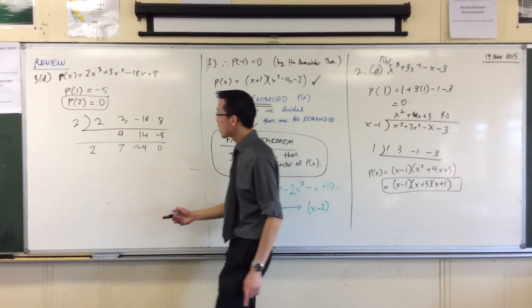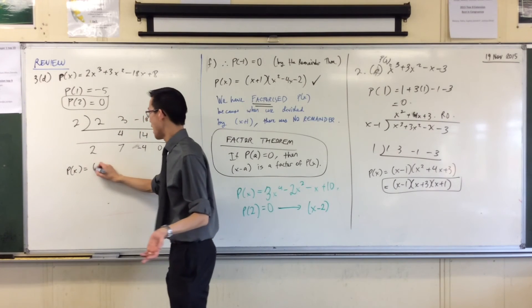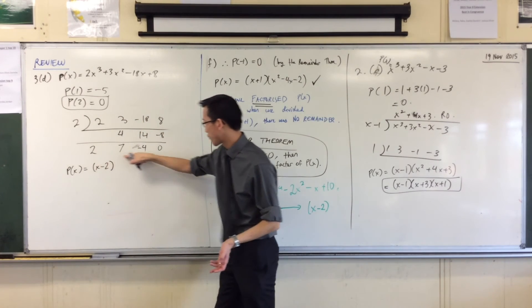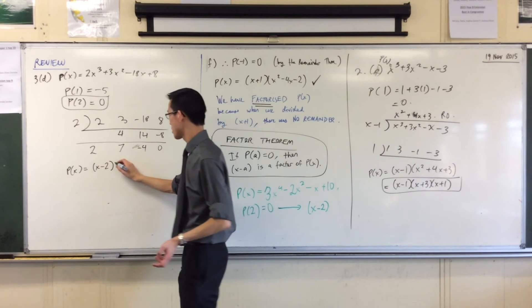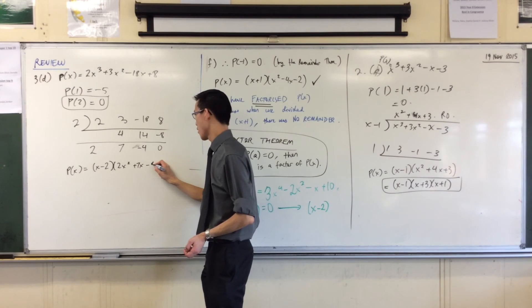Now what does that mean? That means I can write P of x in a newly factorized form. I've taken out this factor. And the other factor I get from this is 2x squared plus 7x take away 4.